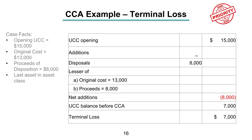Since the UCC balance at the end of the year is positive and there are no other assets remaining in this asset class, this $7,000 balance gets to be deducted from your income as a terminal loss.